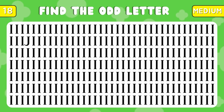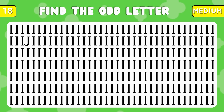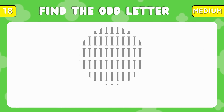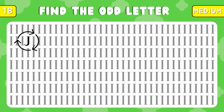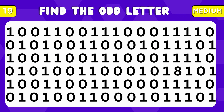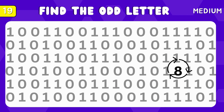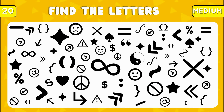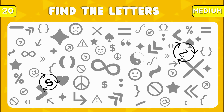Find the odd letter. Right. Find the different number in the binary code. It's the number 8. Great, can you find the letters? Great, it's S and Z.